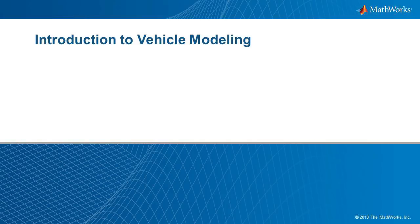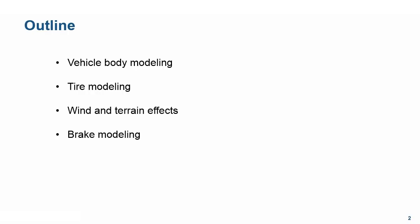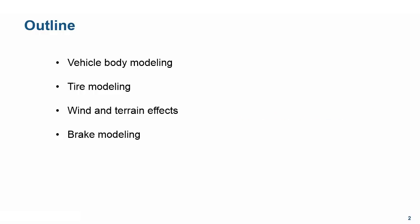In this video, we are going to discuss vehicle modeling. Specifically, we will talk about how to model vehicle bodies, tires, incorporate wind and terrain effects, and modeling brakes. This training will be applicable for both the combustion engine and electric teams as it talks about general vehicle modeling. The core example is a half-car model with tire and brake models with wind and terrain effects.